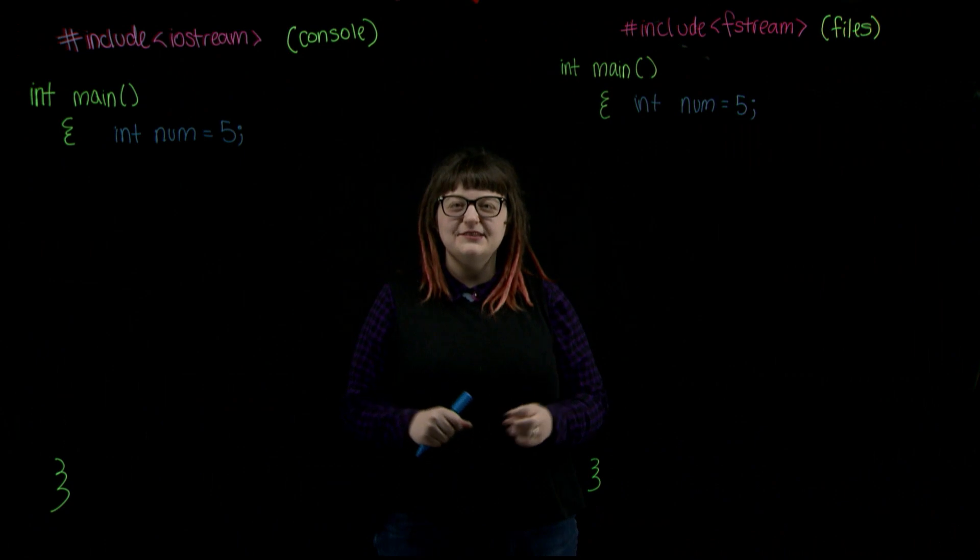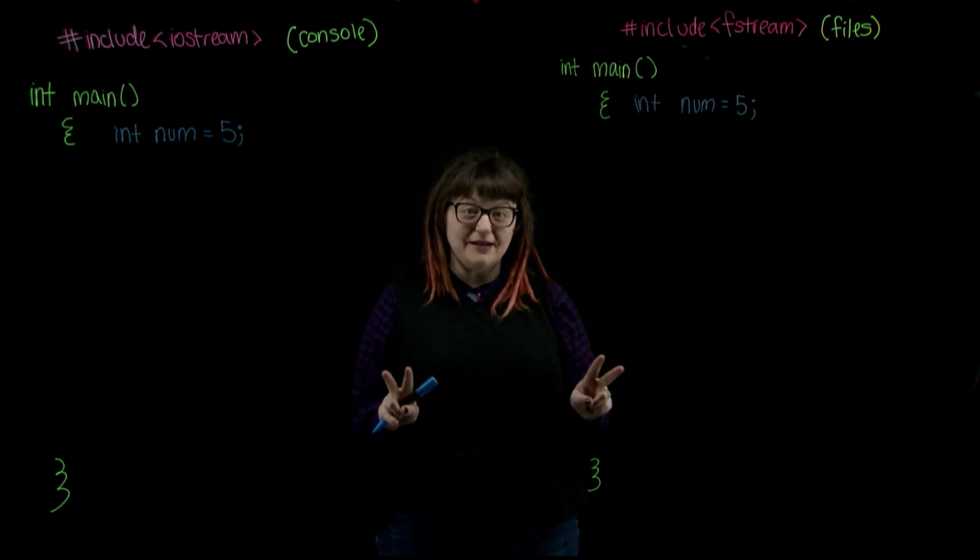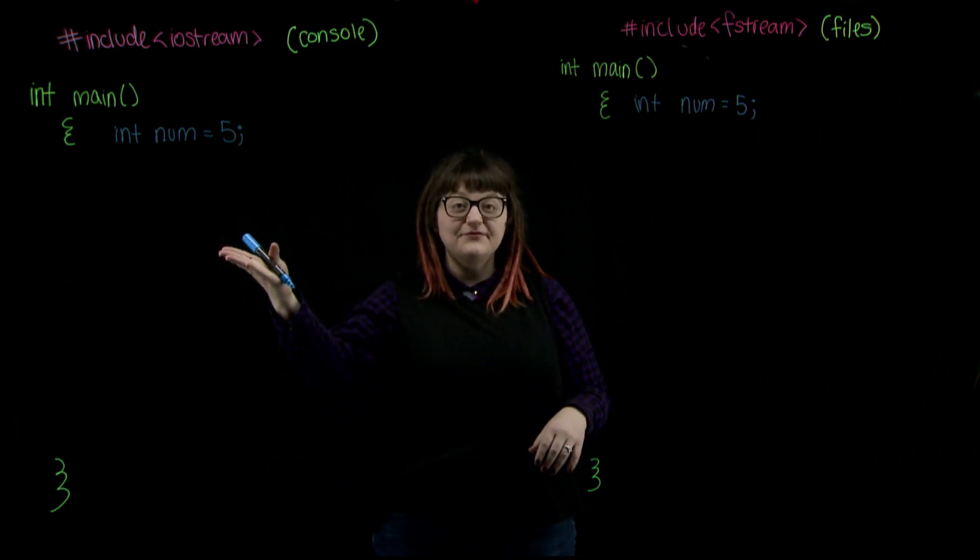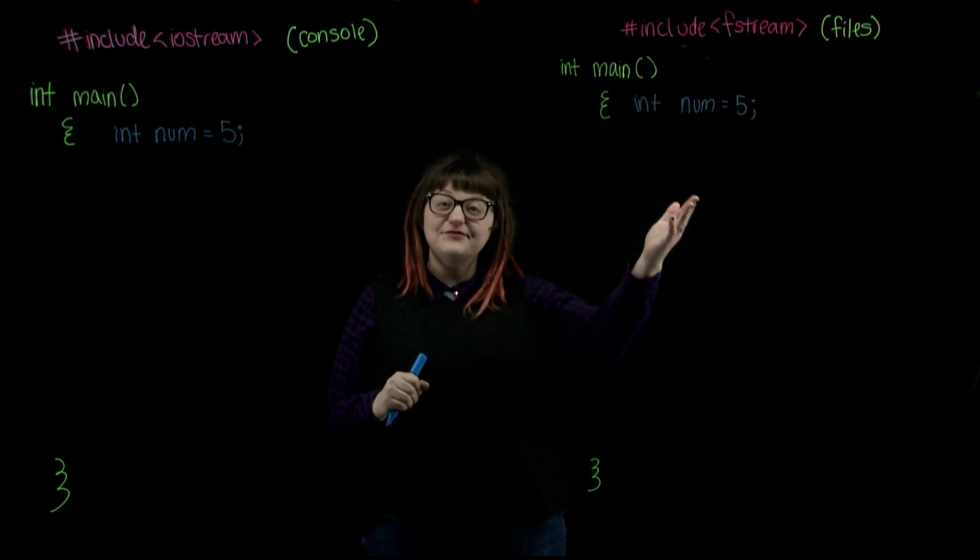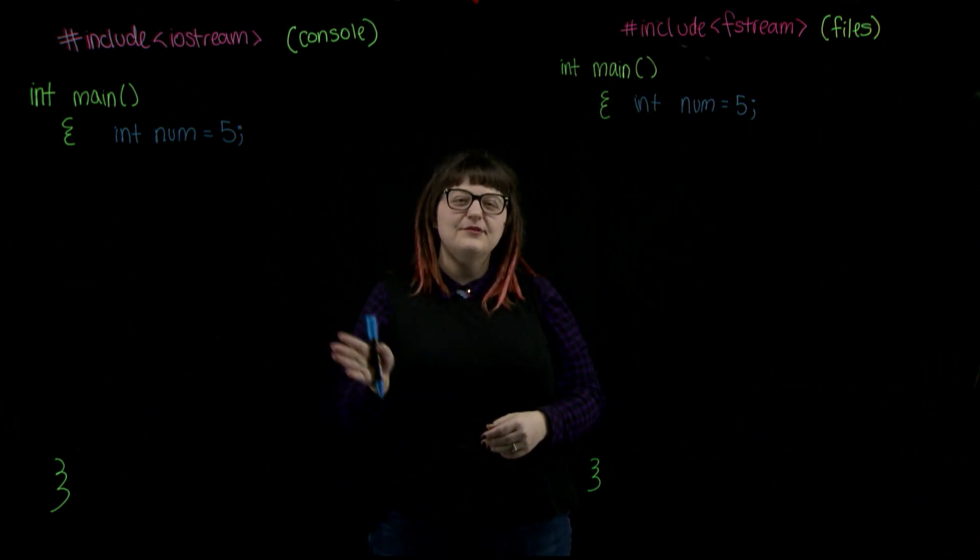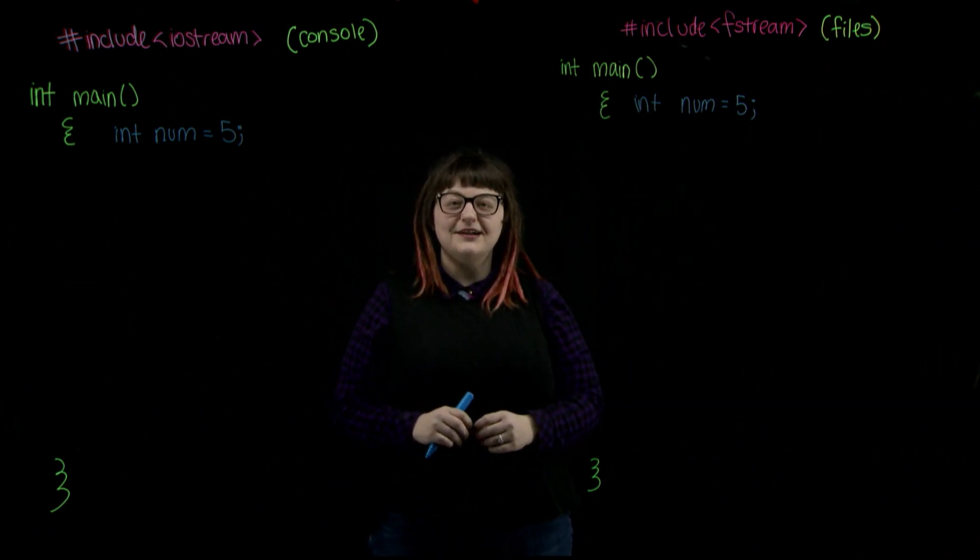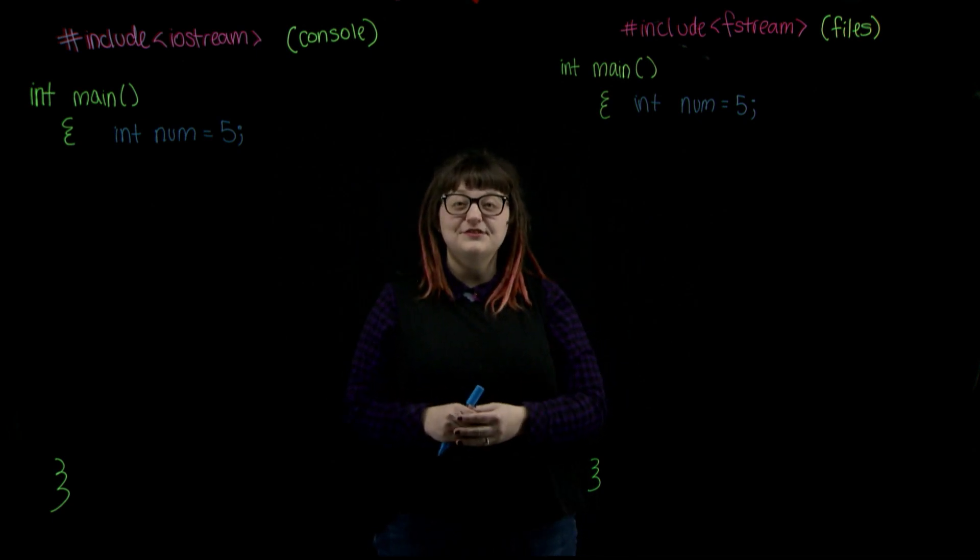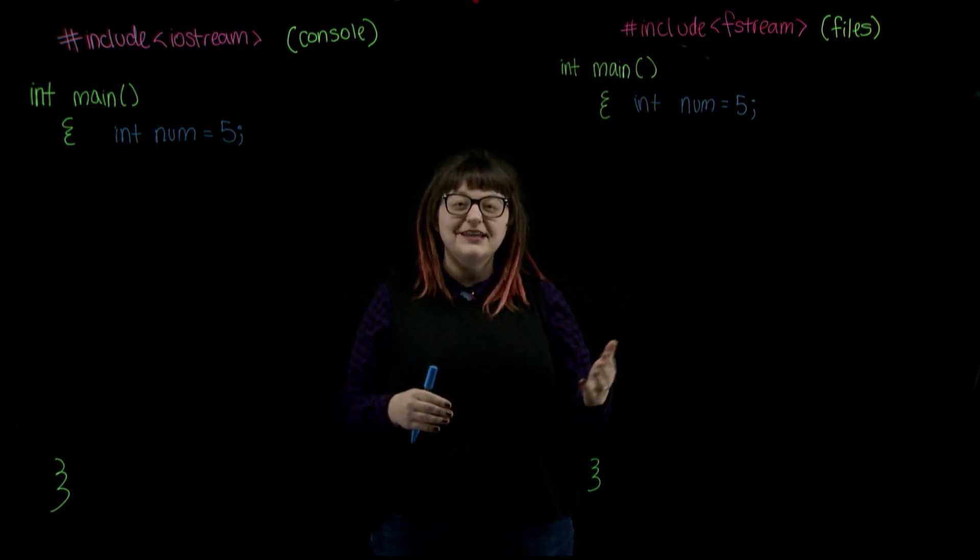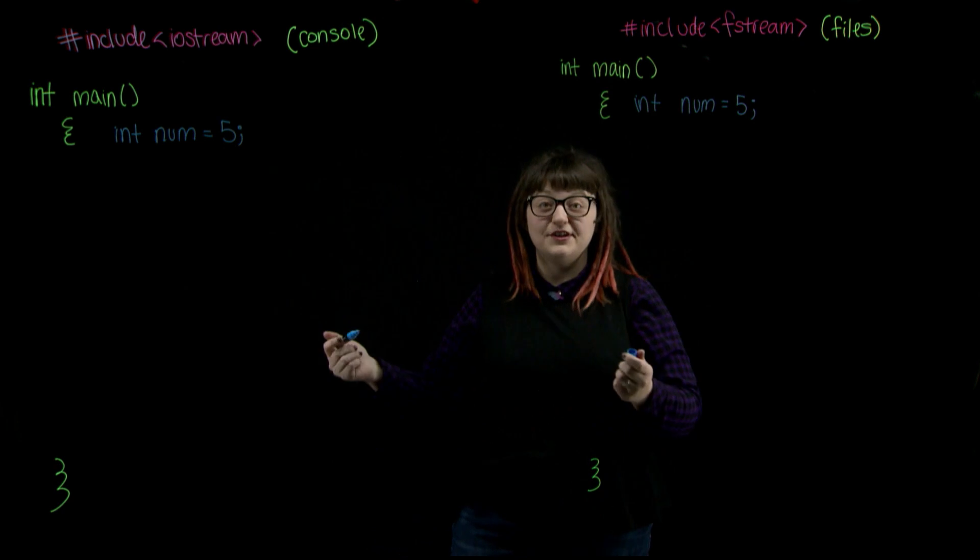So here we have two columns that represent our two input and output libraries. We've got iostream for our console and fstream for our files. We've been working with the iostream library for a little while now. It allows us to use the cin and cout commands for our input and output.